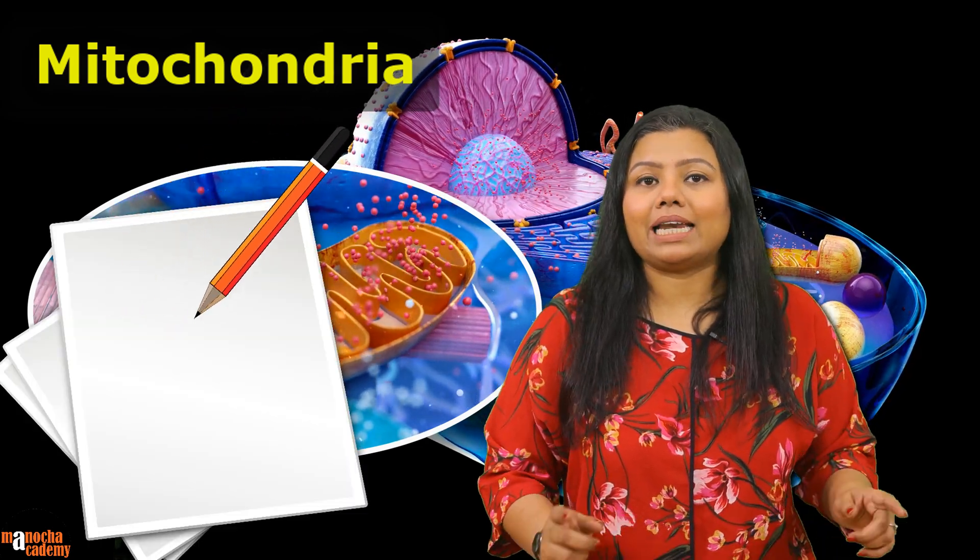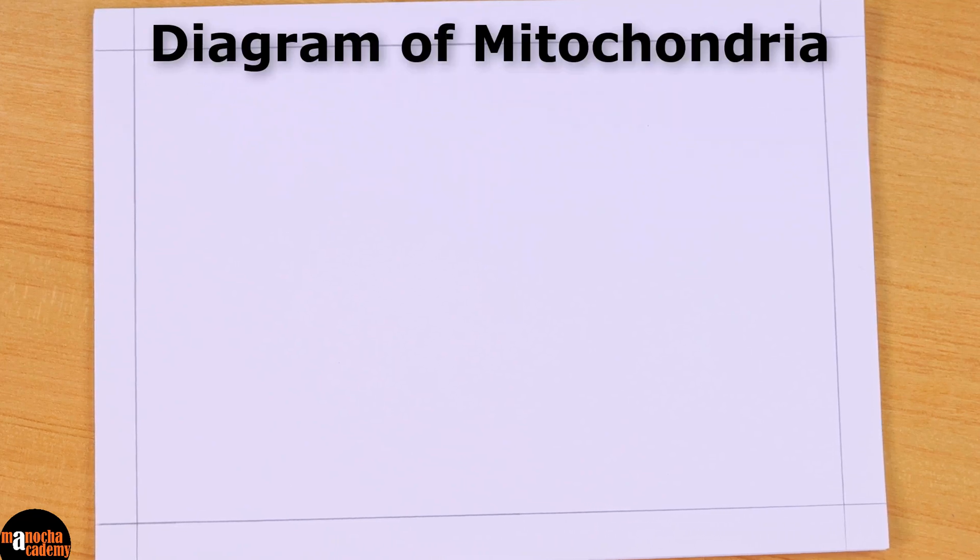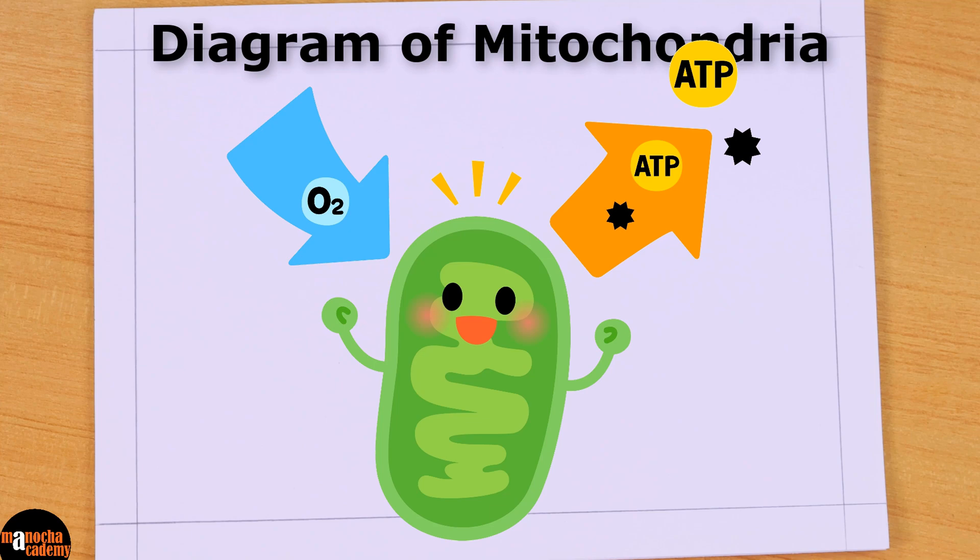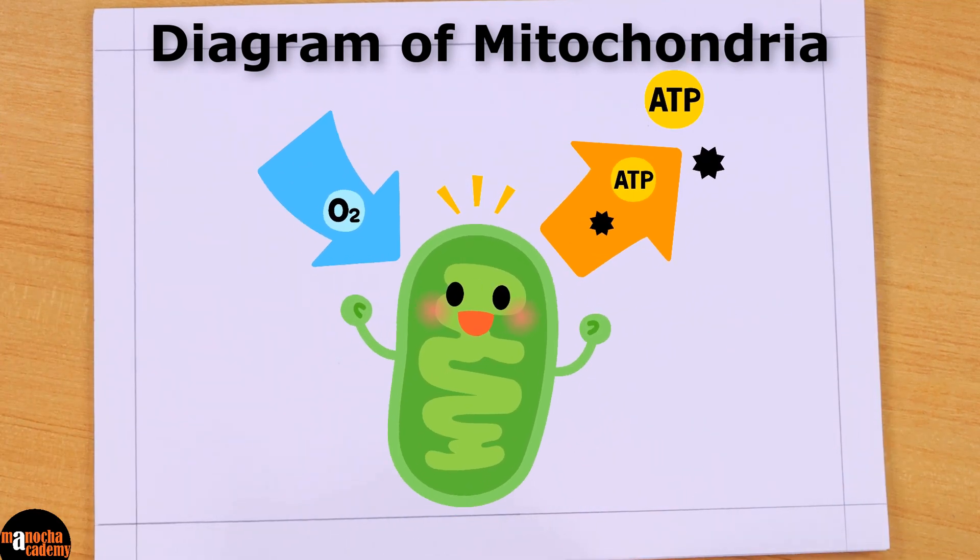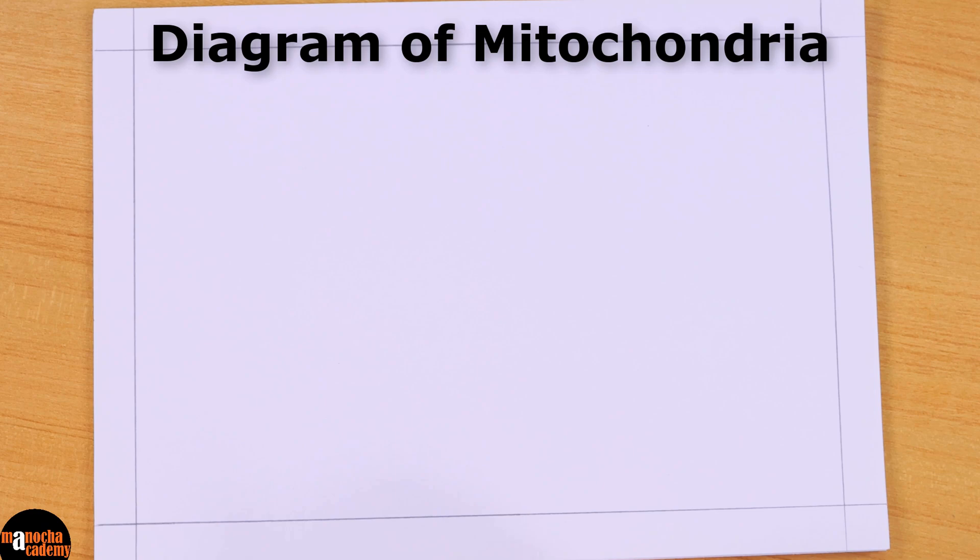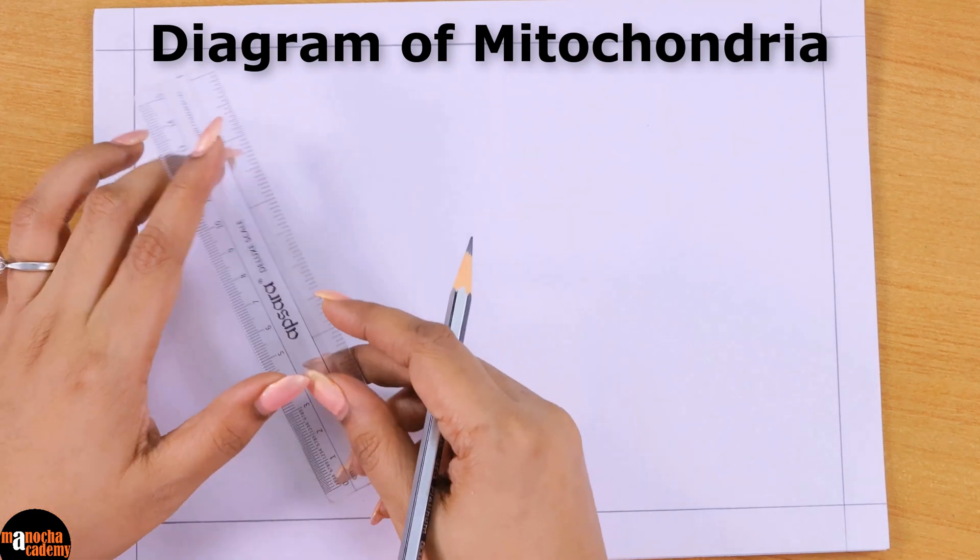So go get your pencil and paper and let's draw this together. Today we are going to learn how to draw the diagram of mitochondria with ease. For that I've taken this paper and I will be using a ruler first to draw the reference lines.